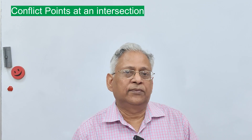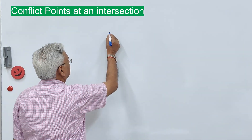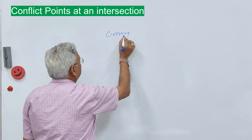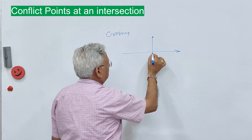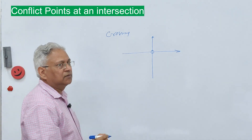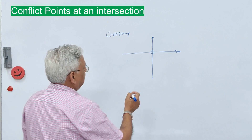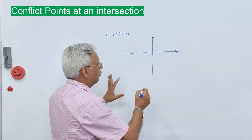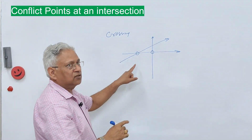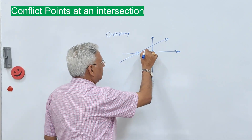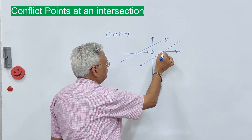There are four types of conflict movement. The first is crossing movement. When two vehicles cross the path of each other, that is a crossing movement. This is the conflict point, and you can imagine it at any intersection. It can be at 90 degrees, or it can be oblique. In the case of conflict, it can be at an acute angle or an obtuse angle. So this is the point of conflict.